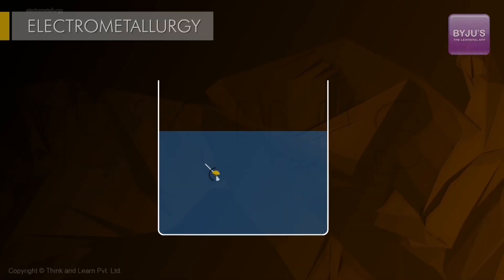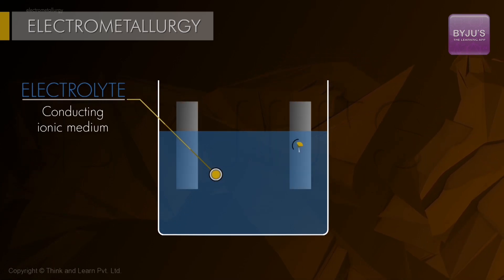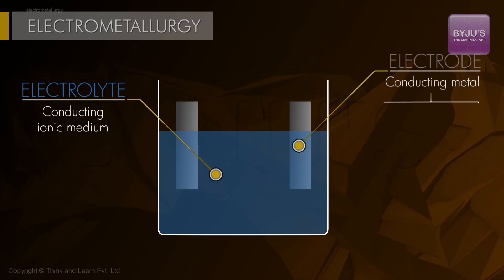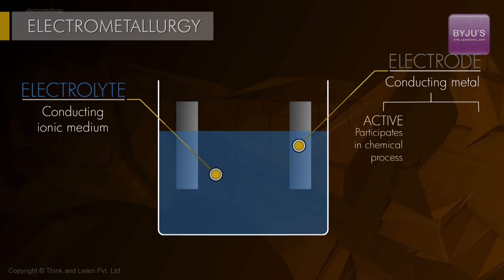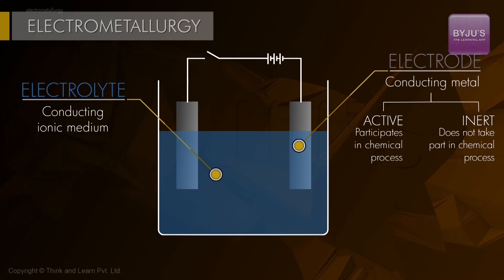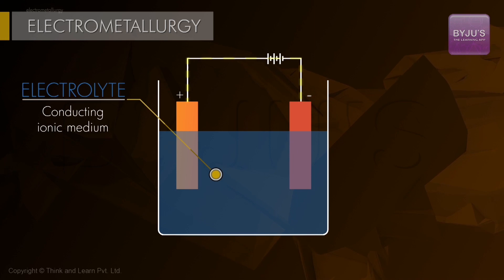Appropriate electrolytes are taken, appropriate electrodes are taken, and the electrodes can either be participative or non-participative — in other words, active or inert electrodes. The right amount of electrical energy is supplied so that electron transfer can take place.